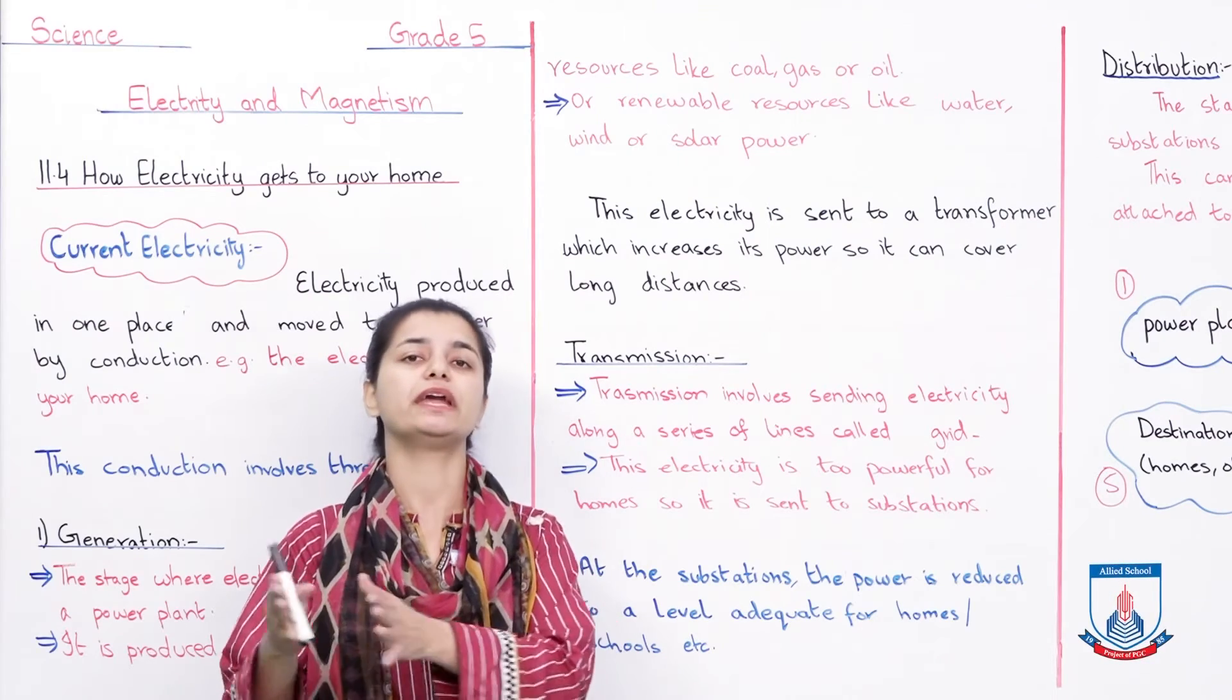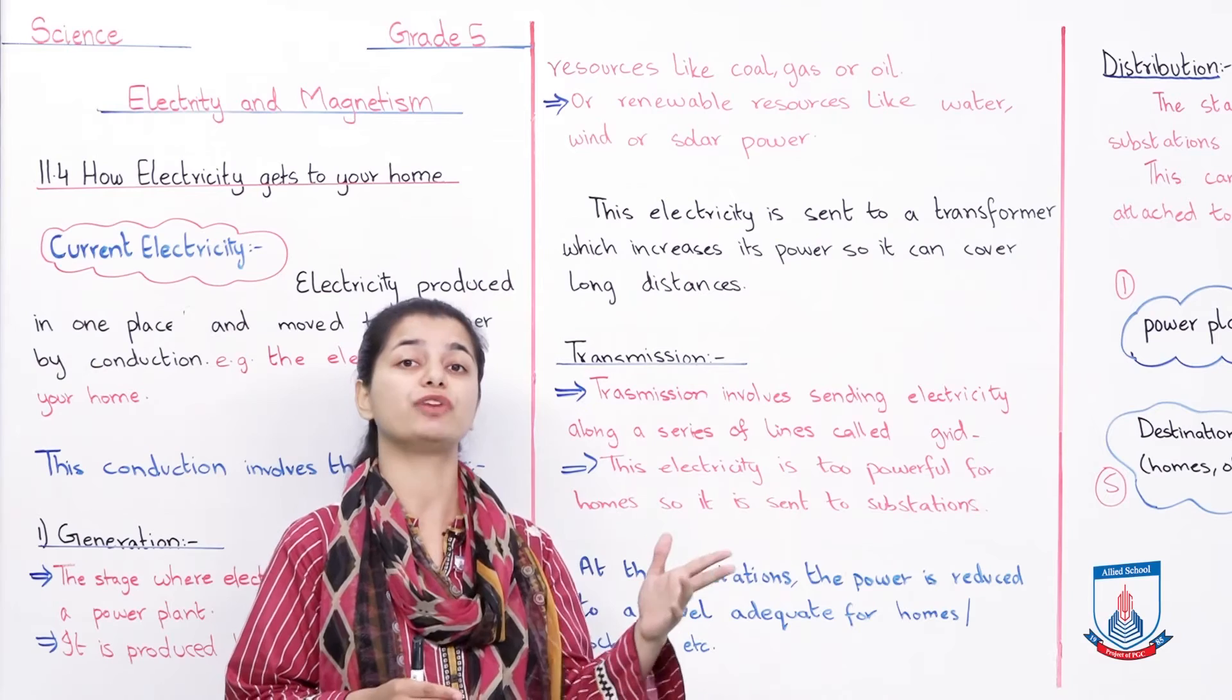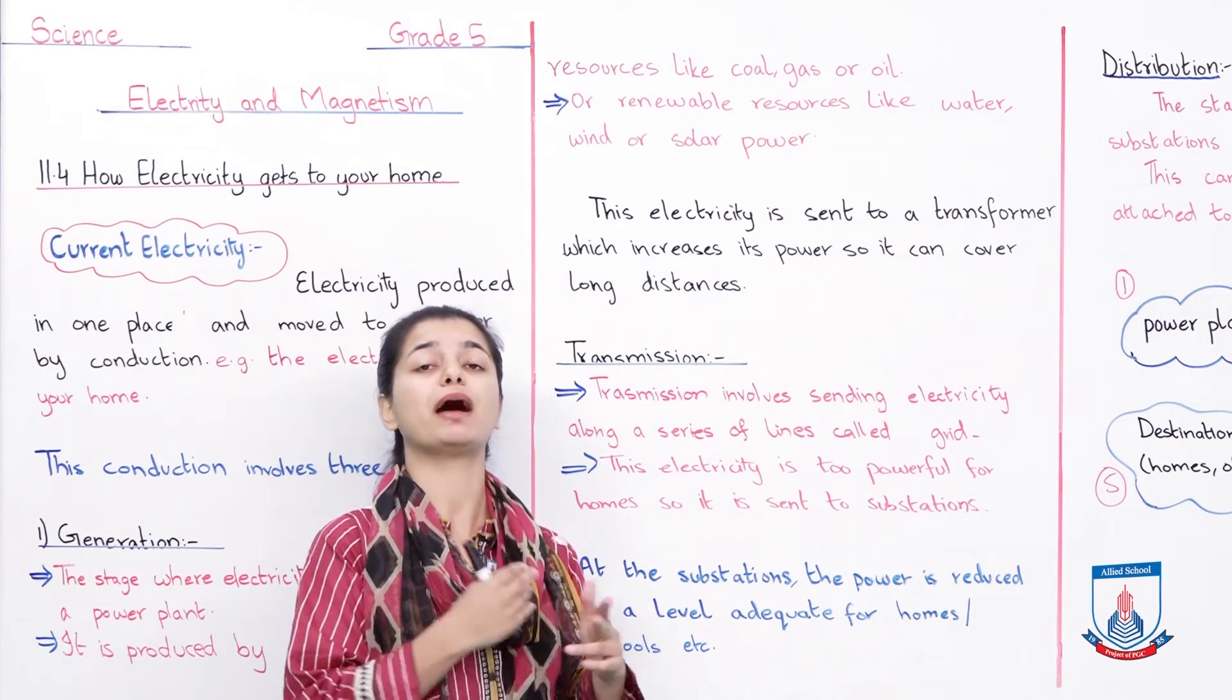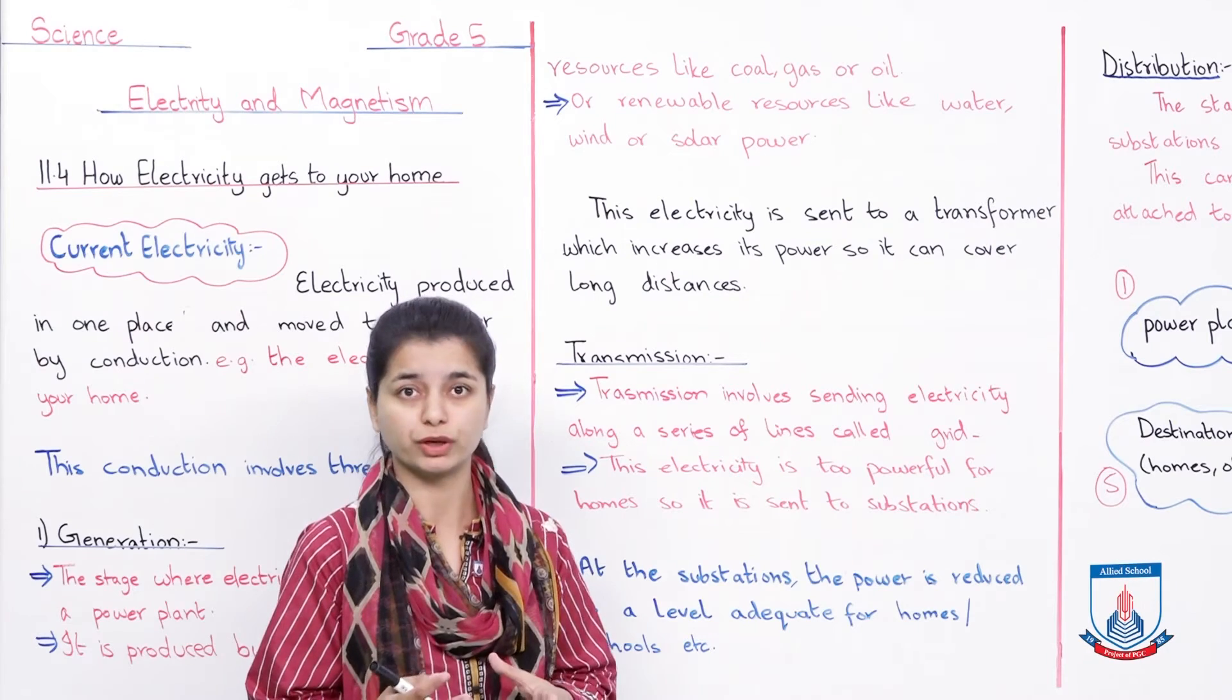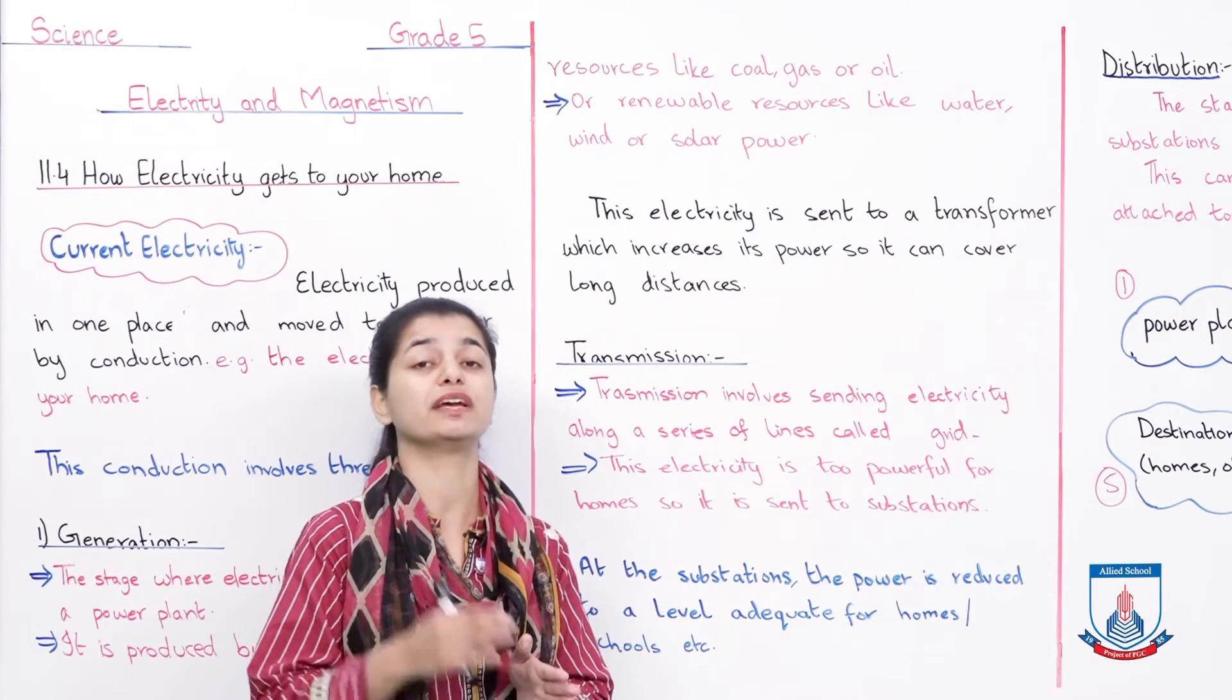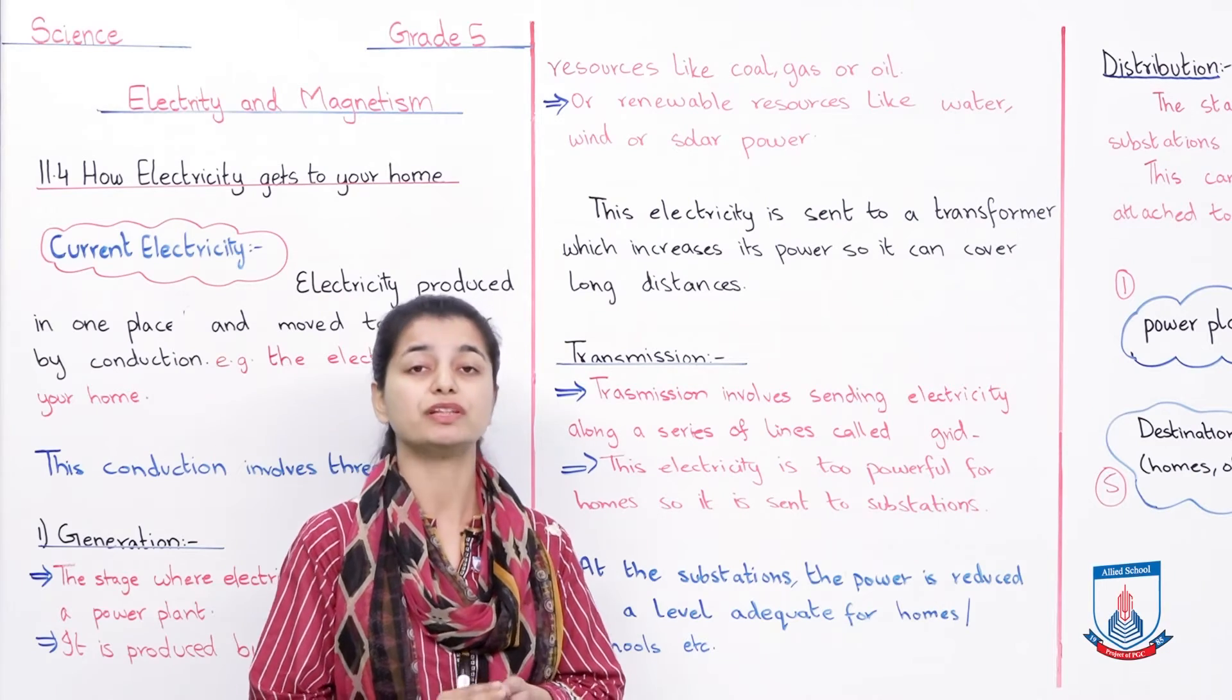But when you send it to substations, the substations are present in smaller areas, so they don't have to travel so far. That's why you reduce the electricity power back at substations. When you send it from substations to homes, you reduce it to a level close to homes without it having to be very strong.